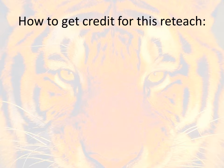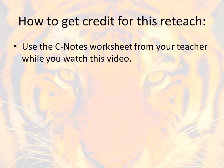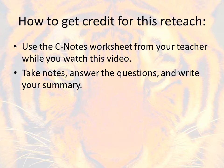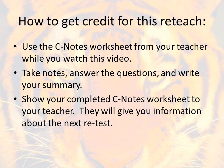While you're working on this reteach, it's important that you make sure you understand how you get credit so that your teacher will know you've completed this. Use the Cornell Note worksheet that came from your teacher while you watch this video. If you don't have one, go back to your teacher and get one. Take notes, answer the questions, and write your summary. When you're finished, show your completed Cornell Note worksheet to your teacher. They will then give you information about your next opportunity to retest.